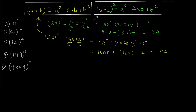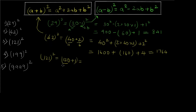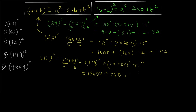Question number 3 is a three-digit problem. Now 121 can be represented as 120 plus 1, or as 100 plus 21. Since 21 is a big number to work with, we take 120 plus 1, because we can easily find the square of 120. So a=120 and b=1, giving us 120² + 2×120×1 + 1² = 14400 + 240 + 1 = 14641.